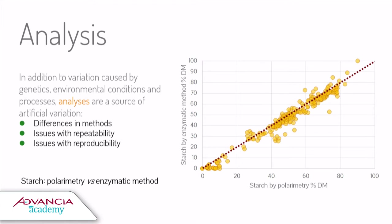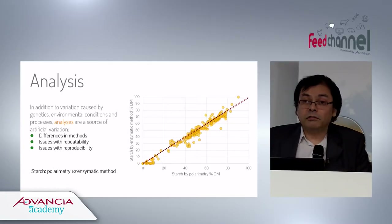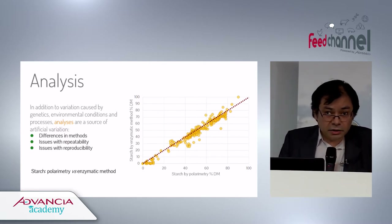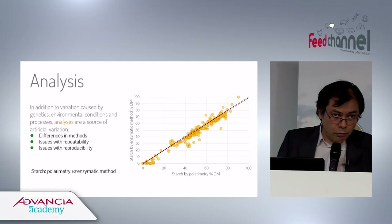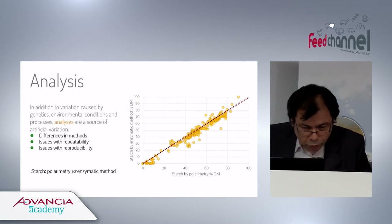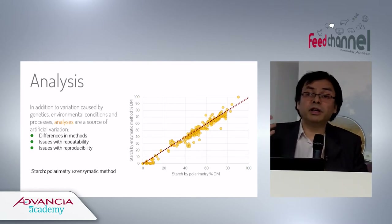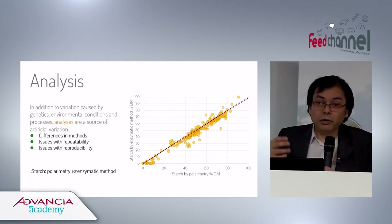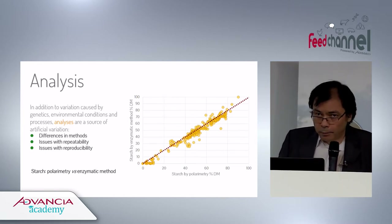Analysis is a major but often overlooked source of variation. When you measure something, there is inherent variation, and different methods may be more or less repeatable and accurate. For example, starch content measured by polarimetry versus enzymatic method: polarimetry typically gives two to three percentage points higher starch content. This is true for many types of analysis.